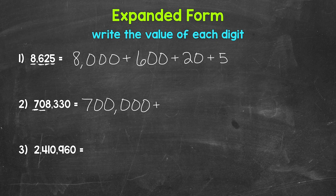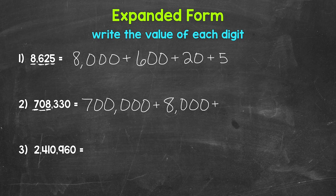So we don't have a value to show here — we don't have a value to write for the ten thousands place. So we can move past that 0 and move to this 8 right here in the thousands place. So this 8 has a value of 8,000. Then we have a 3 in the hundreds place, so the value of this 3 is 300.